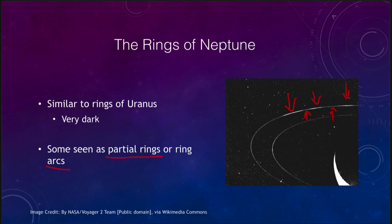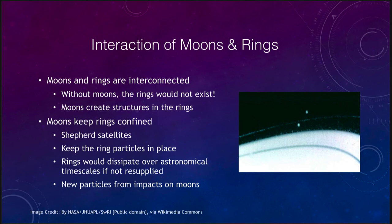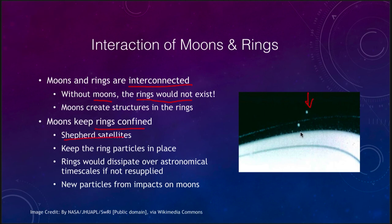Whether these rings are young or old is something we really do not know. The last thing to look at is the interactions between the moons and the rings — without the moons, the rings would not exist. The rings probably came from particles blasted off the moons in impacts. The moons also keep the rings confined — that's what we call the shepherding satellites, which orbit around keeping the ring particles in this very narrow ring well confined.